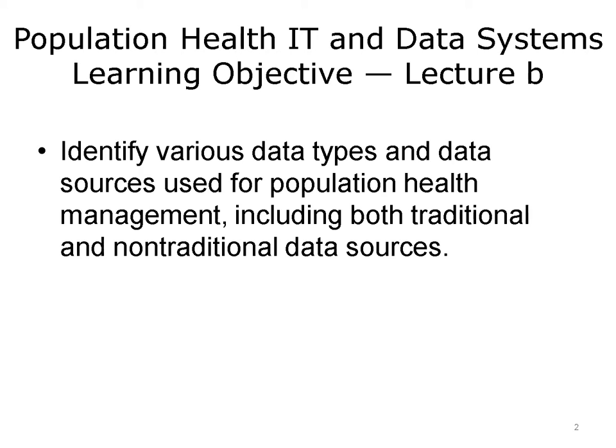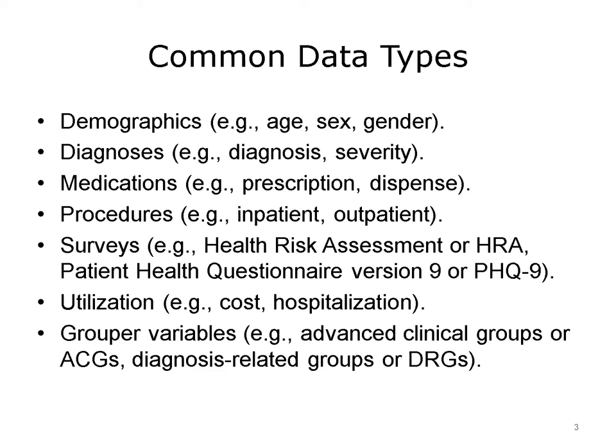This lecture continues the discussion of common data types used for population health and focuses on diagnoses, medications, and procedures as the next set of data types commonly used in population health analytics. Common data types used for population health data systems and analytics include demographics information such as age, sex, and gender; diagnostic information such as the actual diagnosis and severity; medication information such as prescriptions, dispenses, and filled medications; and procedures such as medical evaluations, anesthetic procedures, surgeries, medical imaging, and other procedures in inpatient and outpatient settings.